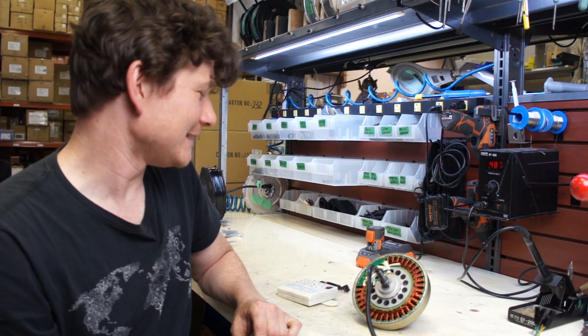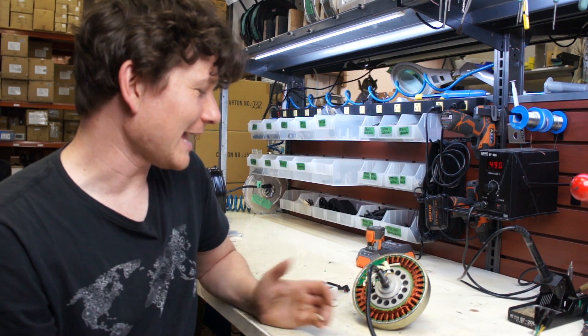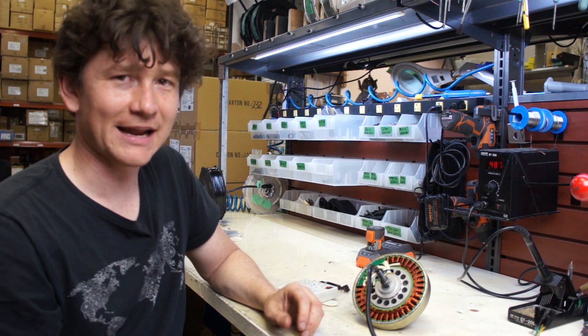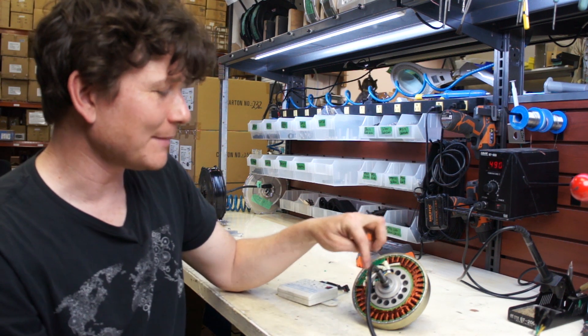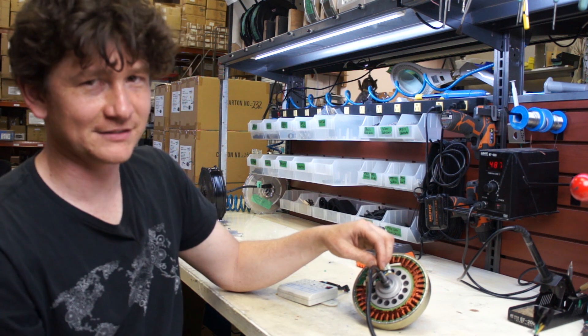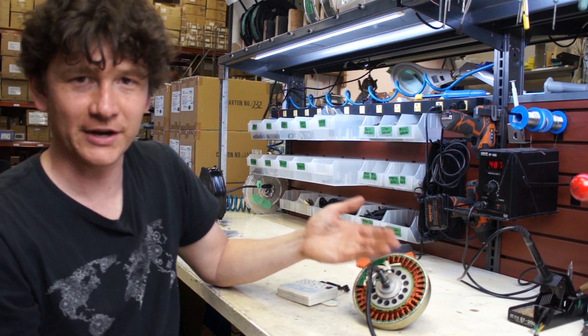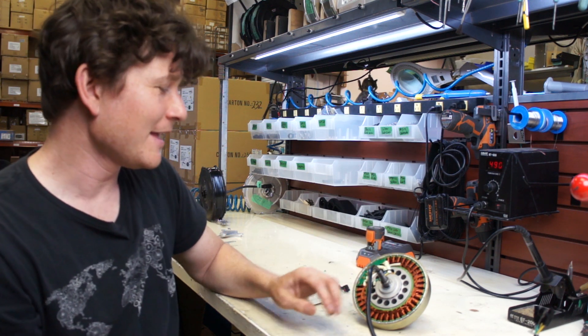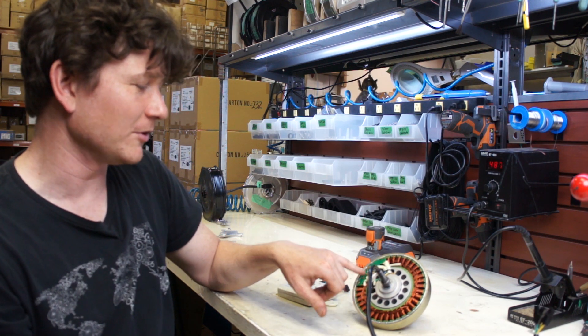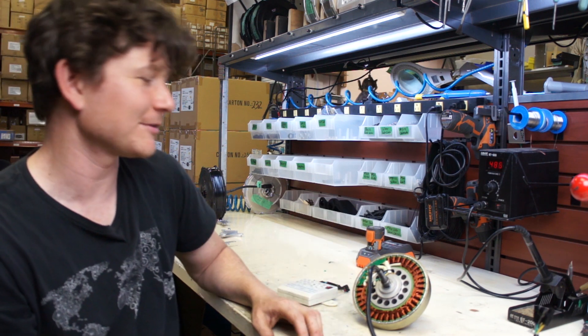This is a case where we suspect there's a damaged hall sensor. That can happen pretty easily when you have an axle spin out because when the cables twist up you can shear through the insulation and short one of the hall sensor wires to one of the phase wires. The phase wires can have full battery voltage on them, putting 36 or 52 volts on one of the hall chips, which can fry the chip.